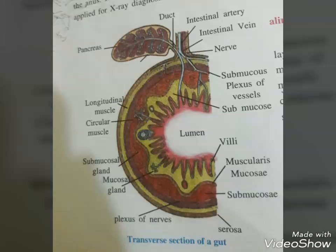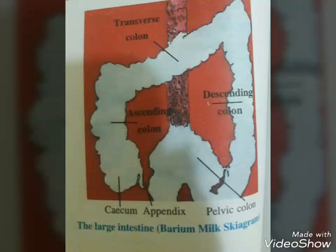The salivary glands are the largest glands situated just outside the buccal cavity and secrete salivary juice into the buccal cavity. The liver is the largest gland of the body, weighing about 1.2 to 1.5 kg in the adult human. It is situated in the abdominal cavity just below the diaphragm and has two lobes. The hepatic lobules are the structural and functional units of the liver, containing hepatic cells arranged in the form of cords. Each lobule is covered by a thin layer of connective tissue called Glisson's capsule.